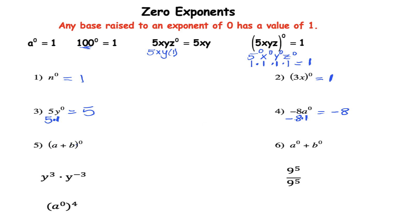Now number 5 I notice I see the parentheses and then the exponent is 0 so I know that my answer will be 1. I have a to the zero plus b to the zero. Now a to the zero has a value of 1 plus b to the zero has a value of 1 but remember we're adding so 1 plus 1 is 2.